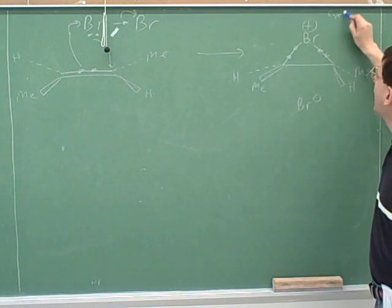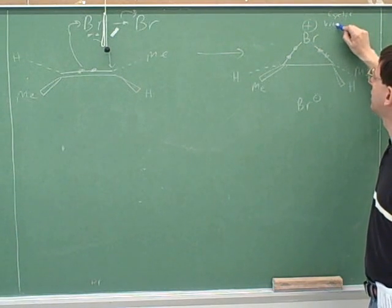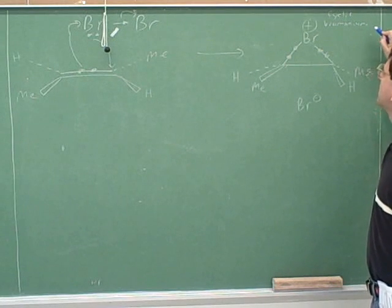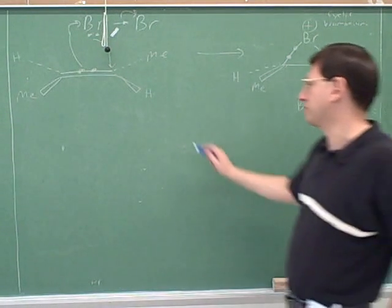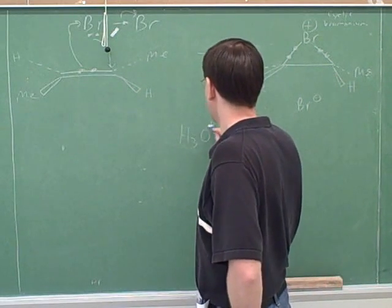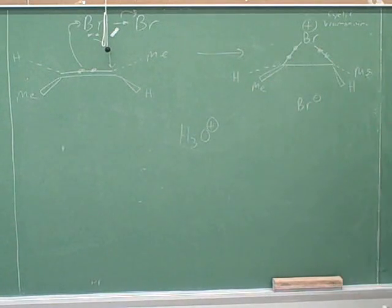Yeah. So this is called a cyclic bromonium ion. Cyclic bromonium. It's clear why it's called cyclic. And -onium is the suffix we use when things have charges. You're already familiar, I think, with, say, hydronium, which is a water with a positive charge. Well, here we have bromonium, a bromine with a positive charge.